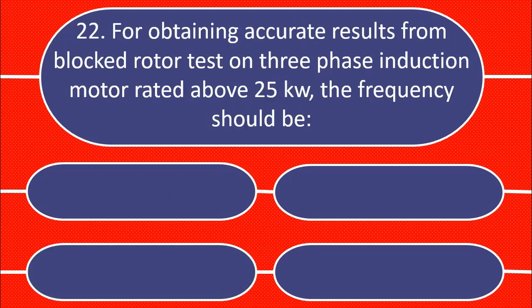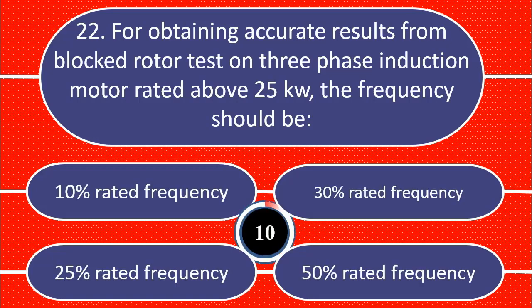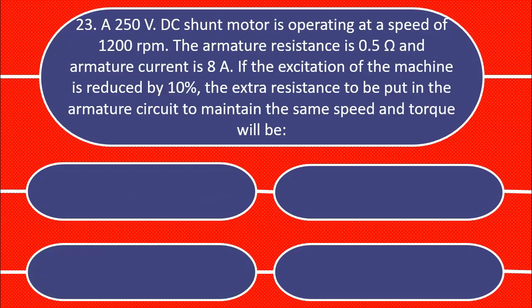For obtaining accurate results from block rotor test on three phase induction motor rated about 25 Kilowatt, the frequency should be. A 250 Volt DC shunt motor is operating at a speed of 1200 RPM. The armature resistance is 0.5 Ohm and armature current is 8 Ampere. If the excitation of a machine is reduced by 10 percent, the extra resistance to be put in the armature circuit to maintain the same speed and torque will be.